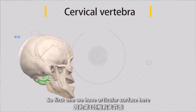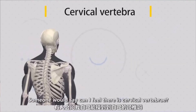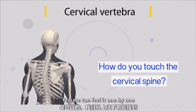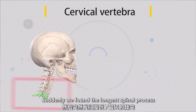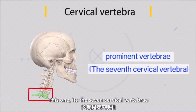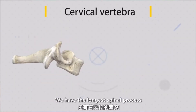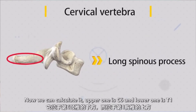The atlas also has an articular surface that forms a joint with the occipital bone of the skull. If you feel the cervical vertebrae one by one, you will suddenly find the longest spinous process — this one is the seventh cervical vertebra. The seventh cervical vertebra has the longest spinous process, so we can use it to count: above is C6, below is T1.